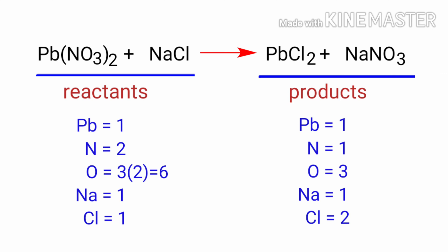In this equation we need to balance the nitrogen atoms first. To do this we need to put a coefficient of 2 in front of NaNO3.